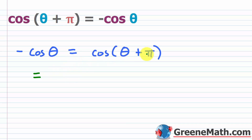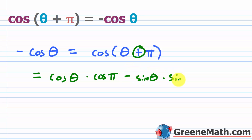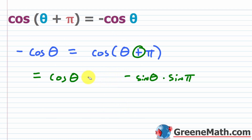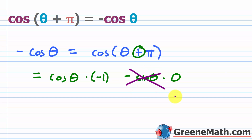From the unit circle, cosine of pi equals negative one and sine of pi equals zero. So the expression becomes cosine of theta times negative one, minus sine of theta times zero. Anything times zero is zero, so we're left with negative cosine of theta, which matches the left side. The identity is verified.